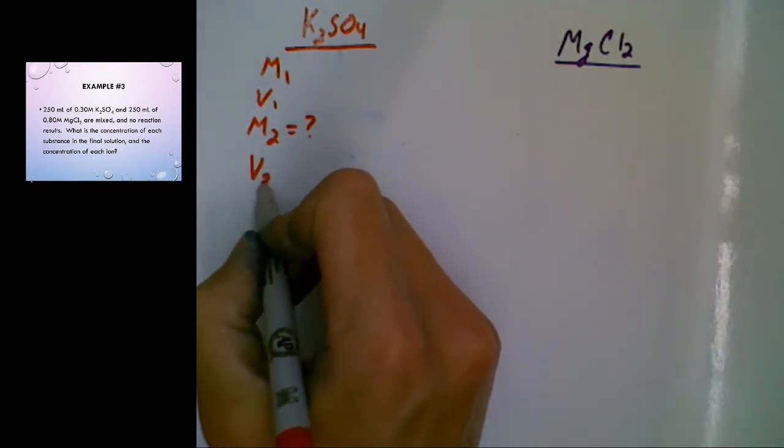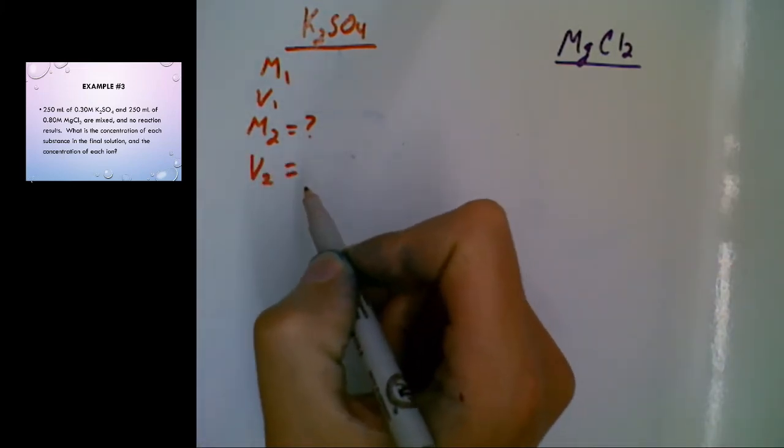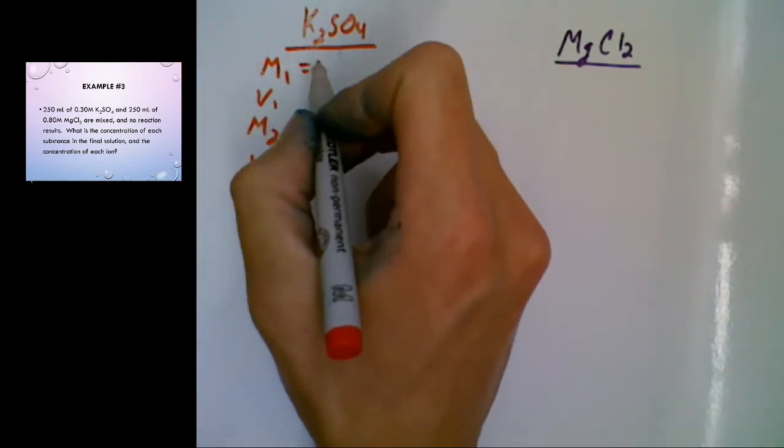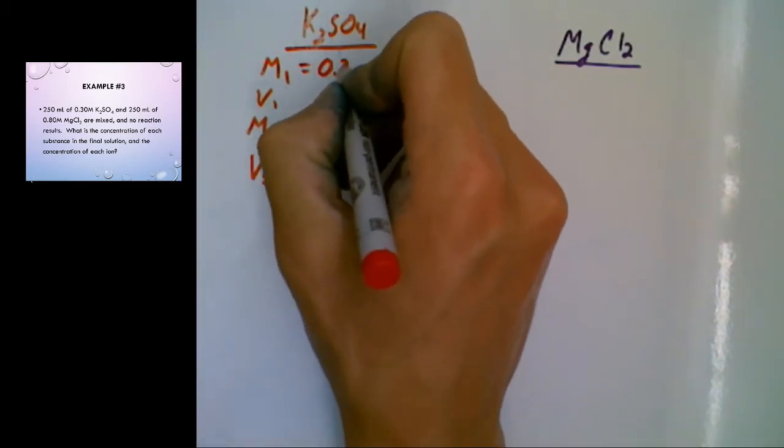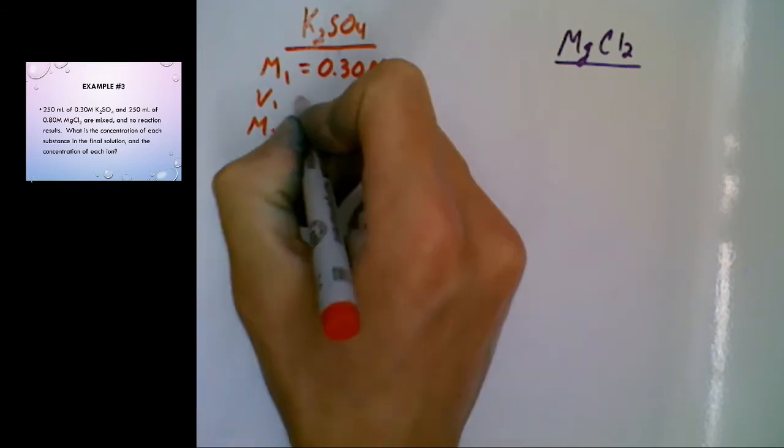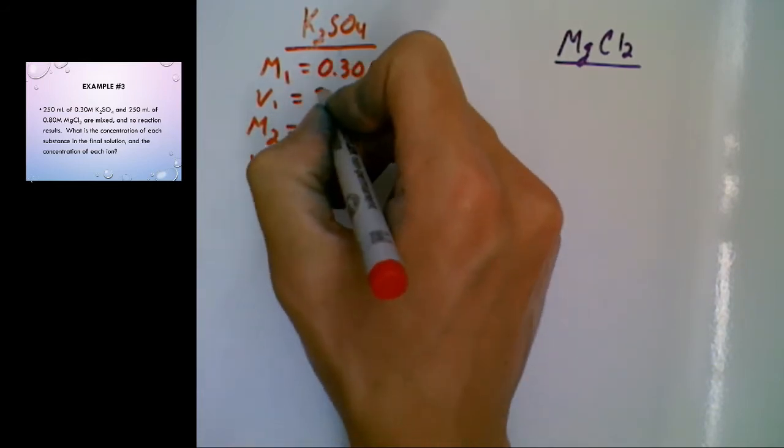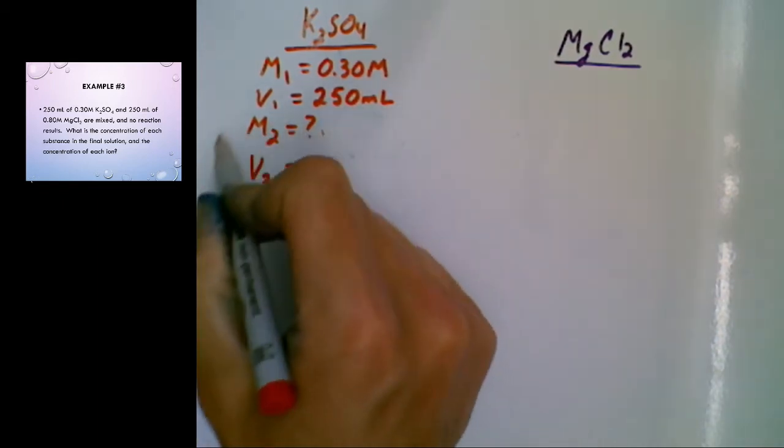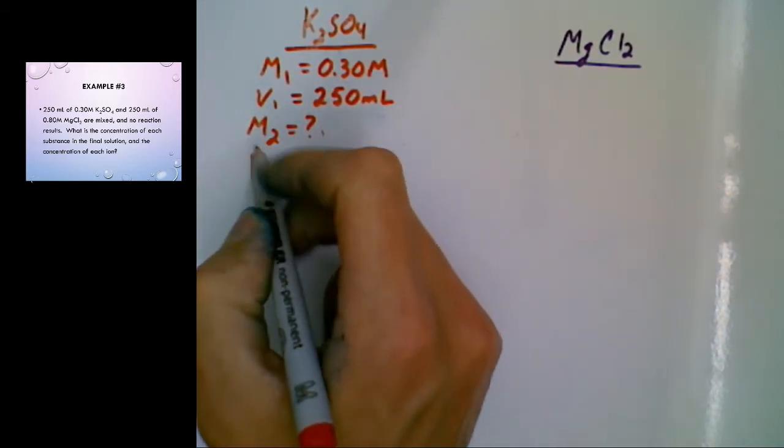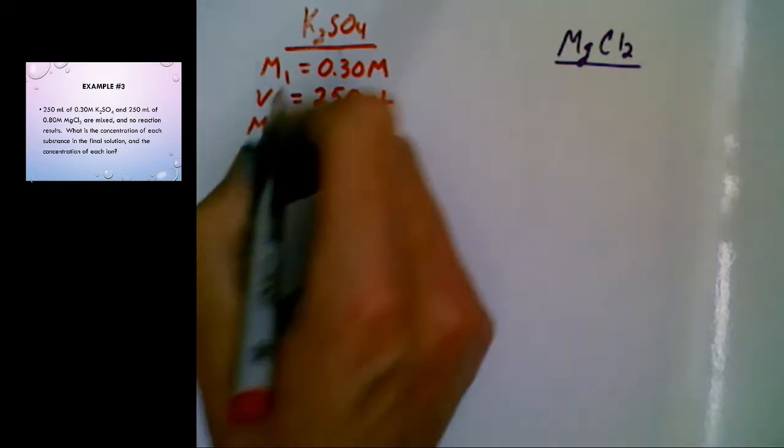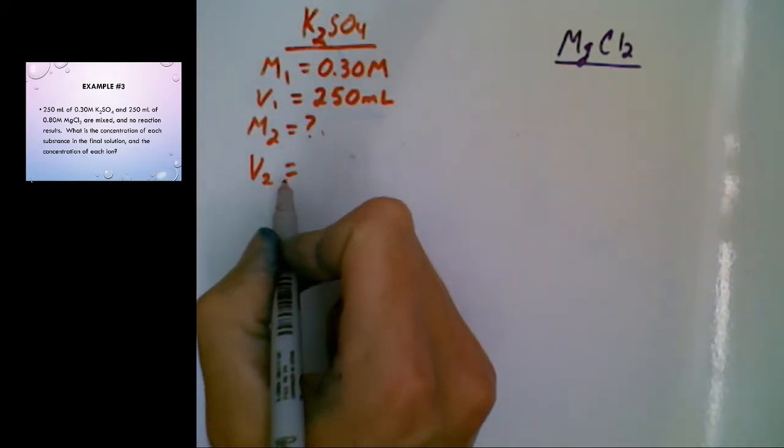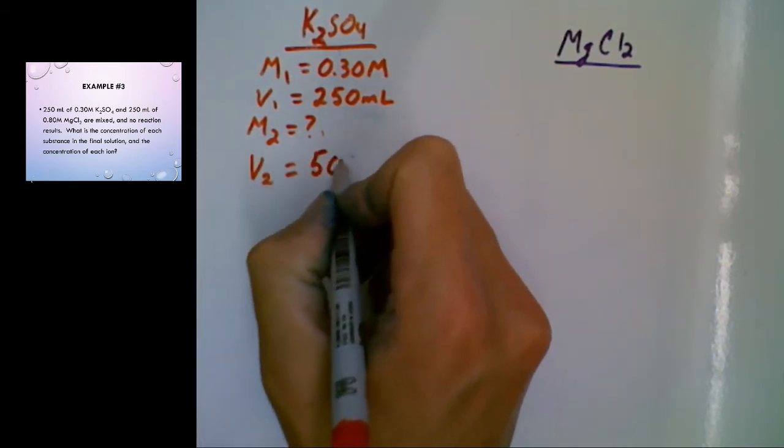The initial concentration for the potassium sulfate was 0.30 molar. The initial volume, 250 milliliters. We don't actually know what the concentration was after the mixing. That's what we're going to be calculating here. But we do know the final volume is 500 milliliters.